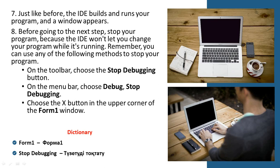Seventh step: just like before, the IDE builds and runs your program and the window appears. Eighth step: before going to the next step, stop your program because the IDE won't let you change your program while it's running. You can use any of the following methods to stop your program: first, on the toolbar choose the Stop Debugging button; second, on the menu bar choose Debug, Stop Debugging; third, choose the X button in the upper corner of the Form1 window.